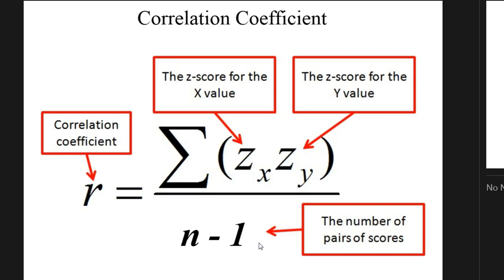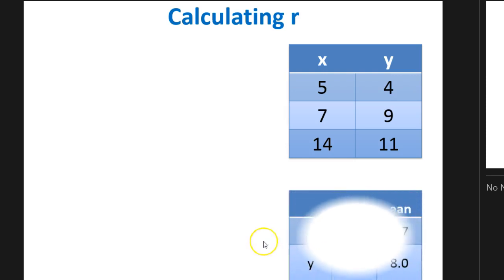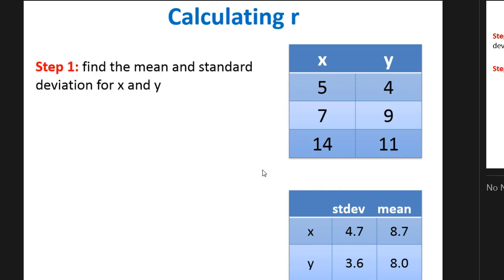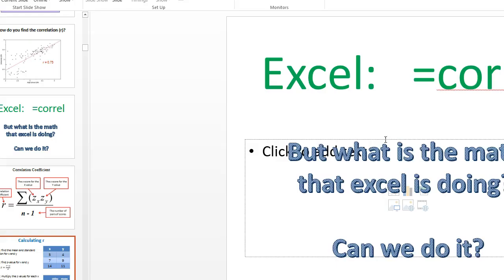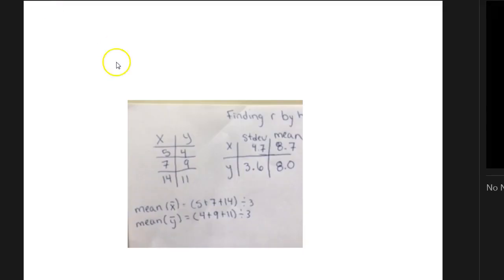So here is our example. Our first step is to find the mean and standard deviation for x and for y. I've already given you the mean and the standard deviation, but I want to show you: our n value is three because there are three points here. I want you to see how I would find the average for my x values and my average for my y values.